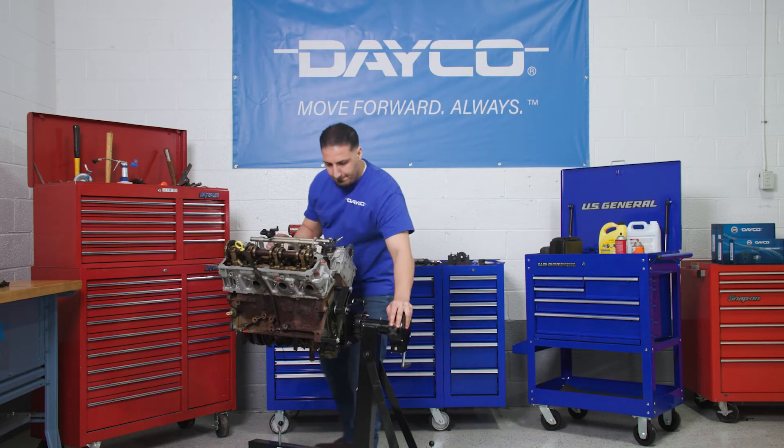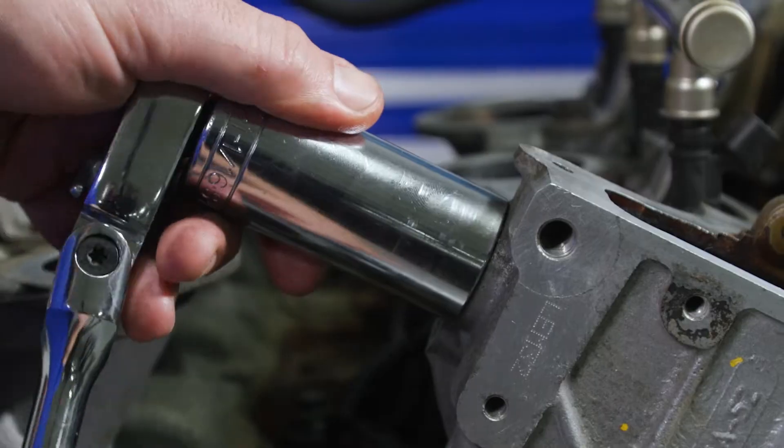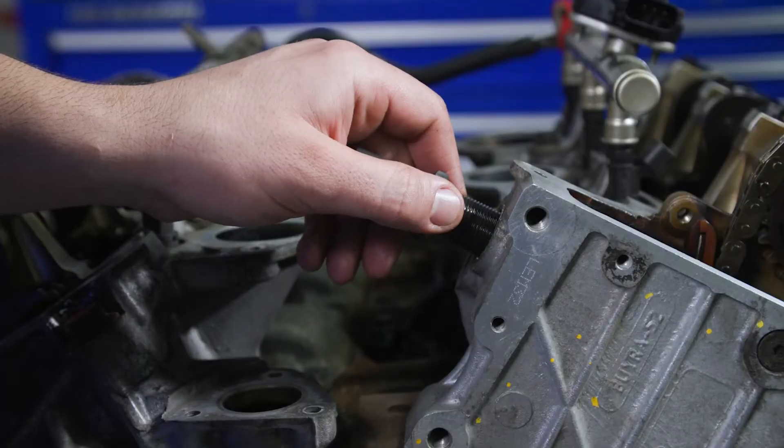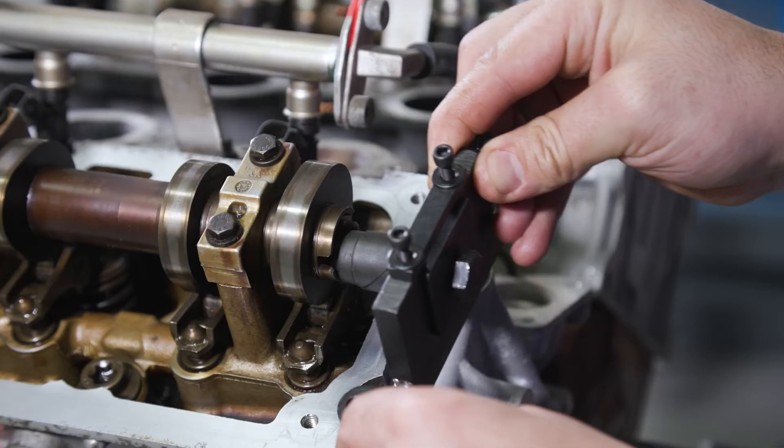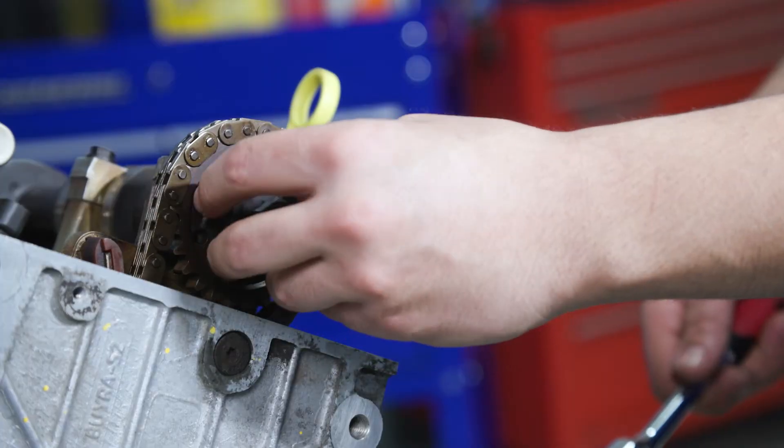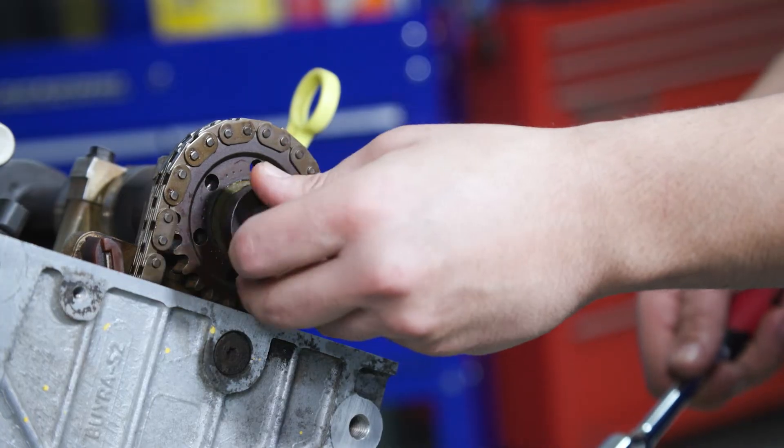It is now time to move to the front of the engine. Start by removing the left bank tensioner. Install the camshaft locking tool on the left bank cam. Remove the sprocket bolt from the left bank at this time.